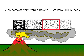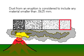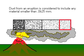Ash particles vary from 4 millimeters to 6 hundredths of a millimeter. Dust from an eruption is considered to include any material smaller than 6 hundredths of a millimeter.